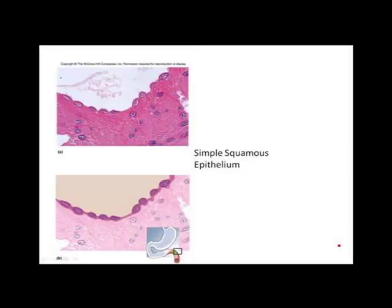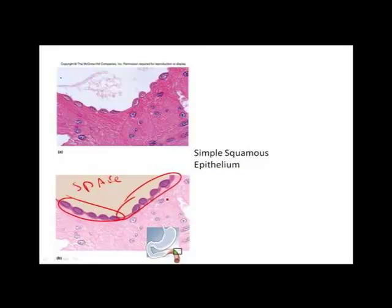In this first image, it's a combination of a microscopic image as well as an illustrated image. This is taken from the outer surface, or the superficial surface, of the small intestine portion called the jejunum. The internal surface of the jejunum is lined with epithelium as well, which would be the luminal surface. What you're looking at here is the external surface called the serous membrane. This space here would be the abdominal cavity, the space between the small intestine and other structures. These cells in here are the epithelial cells, and in this particular case, they're called simple squamous epithelium.